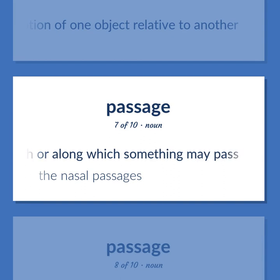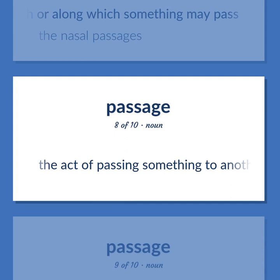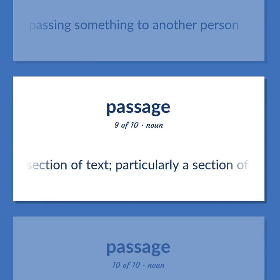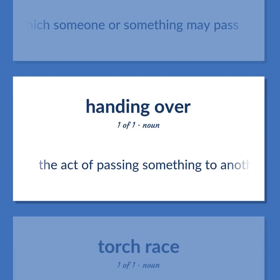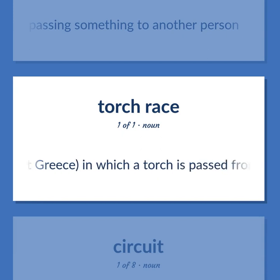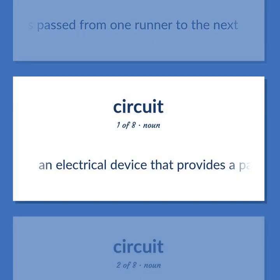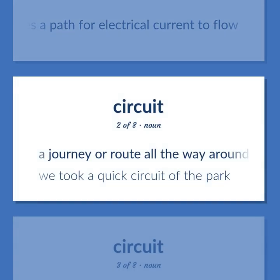The nasal passages. The act of passing something to another person. A section of text, particularly a section of medium length. A way through or along which someone or something may pass. The act of passing something to another person. Ancient Greece: a relay race in which a torch is passed from one runner to the next. An electrical device that provides a path for electrical current to flow.